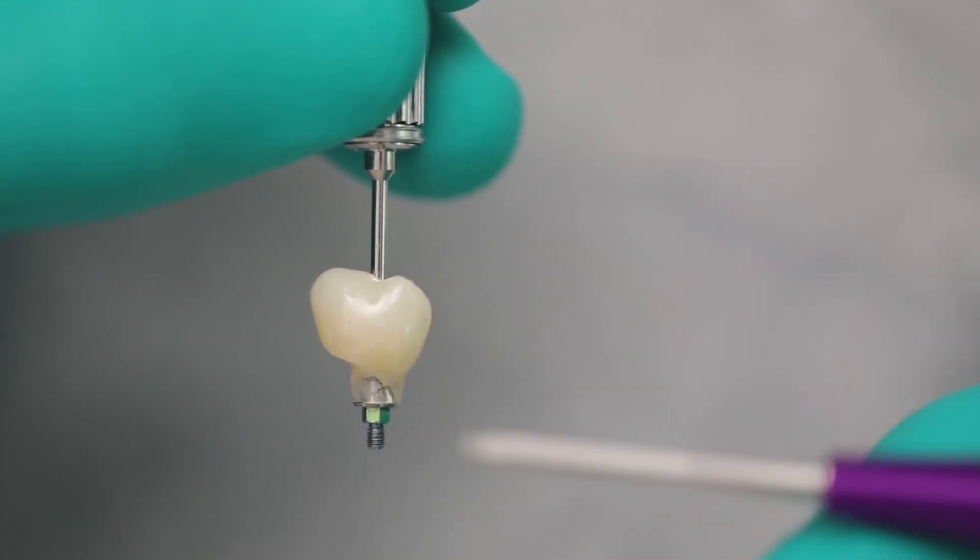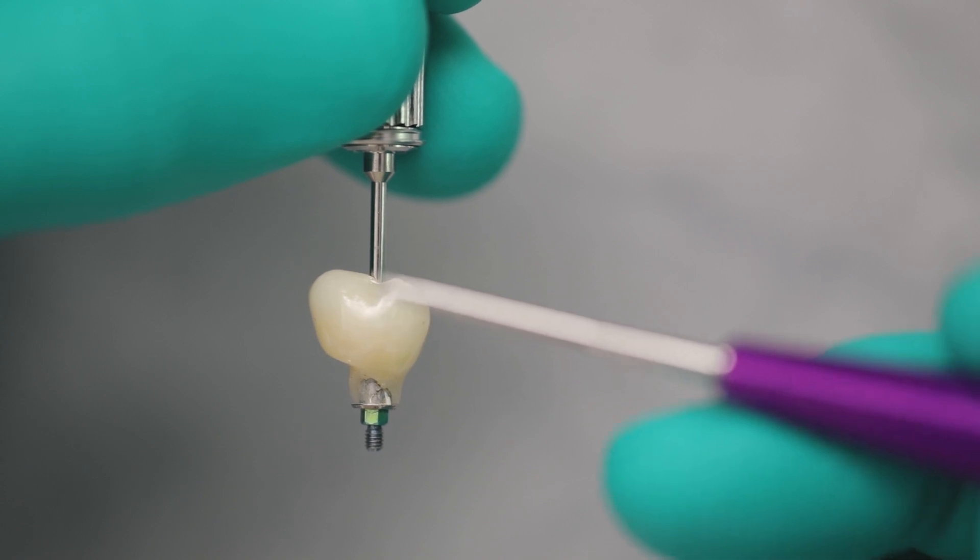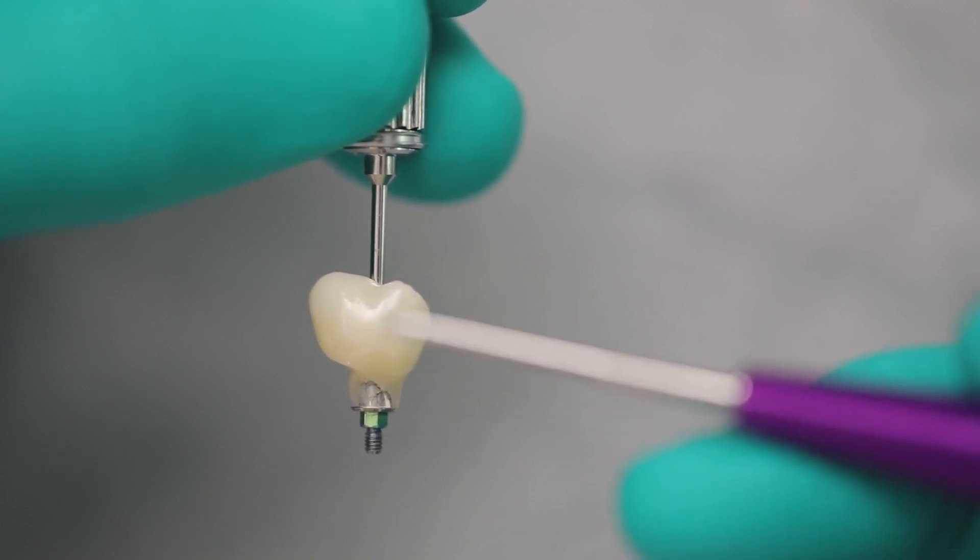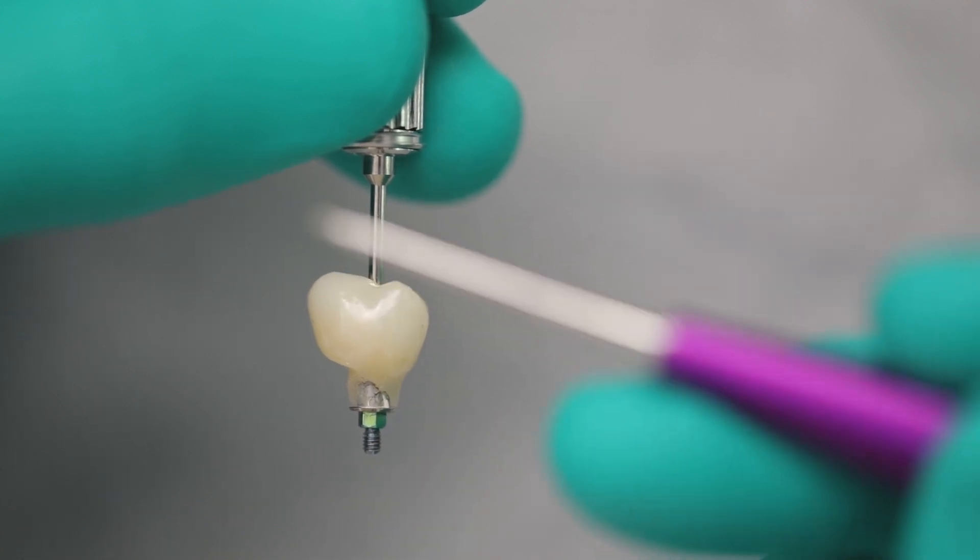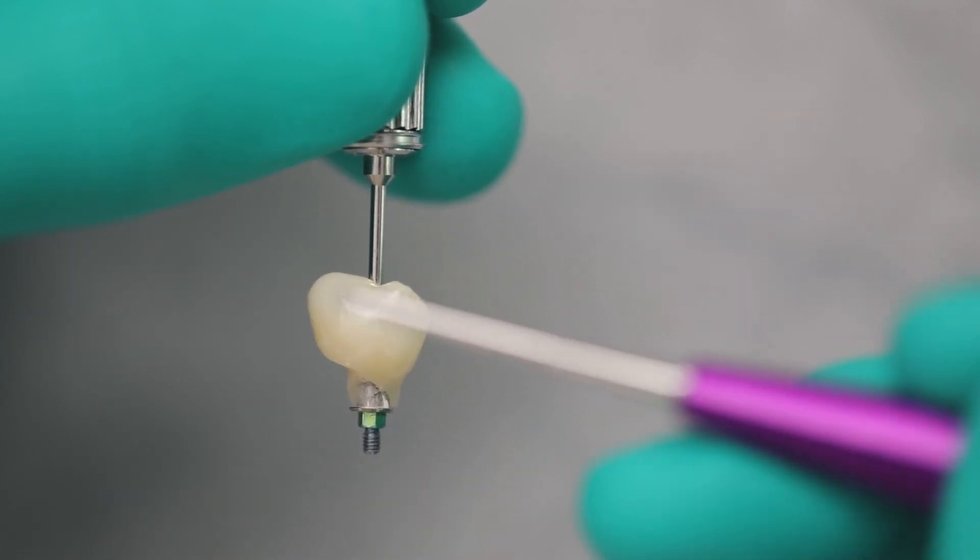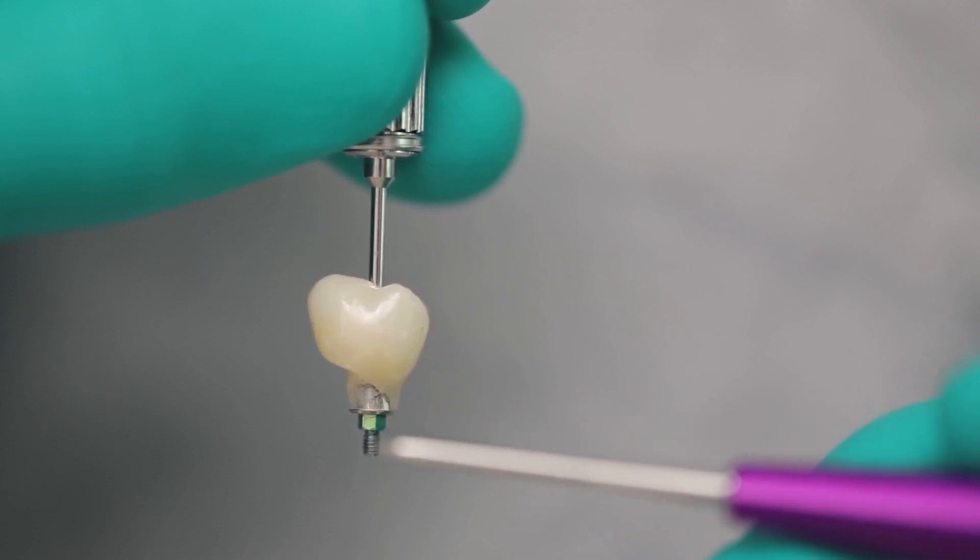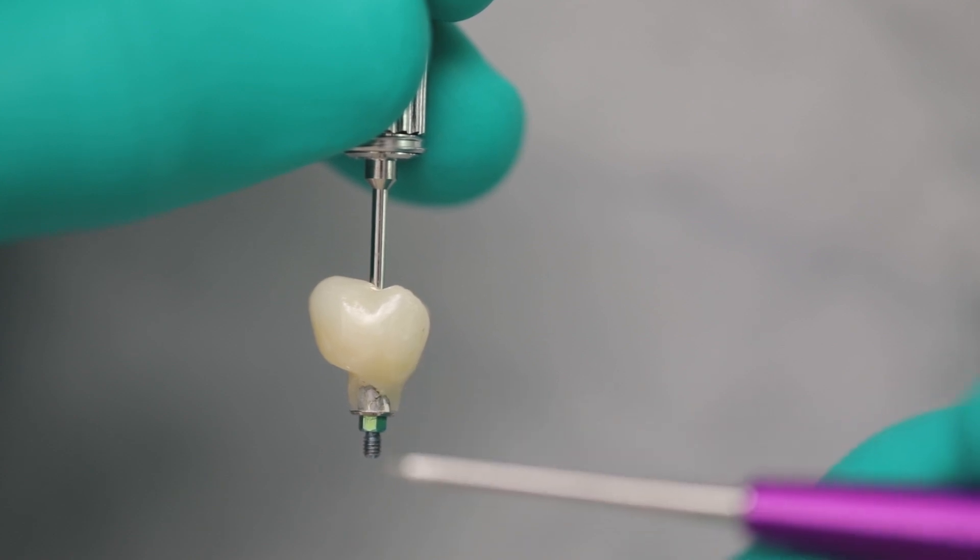When you see a Snoopy, you have immense power in terms of knowing how this case might play out and what potential problems the patient might face going forward. And you can start to mitigate those problems and work with the patient long before this actually fails. You know, you can talk to them about, Mrs. Smith, this screw might loosen over time. And if it does, don't worry about it, come in and we'll tighten it for you. Because with these cantilevers, these Snoopies, you can have screw loosening, you can have prosthetic breakage, you can have prosthetic screw breakage, you can have a button breakage, you can have implant breakage, you can have a lot of problems.